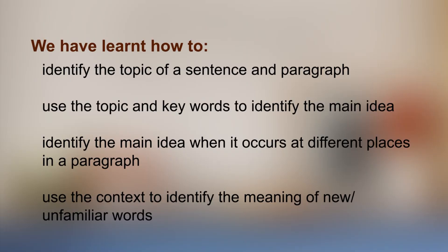Before we wrap up this module, let us summarize what we have done. We have learned how to identify the topic of a sentence and a paragraph, use the topic and keywords to identify the main idea, and identify the main idea when it occurs at different places in a paragraph. And finally, use the context to identify the meaning of new or unfamiliar words. We hope that this has been useful for you. You will find practice activities in your worksheet. Links to online resources have also been provided. Do take a look. Keep reading and enjoy the experience. Remember to make finding the main point of a paragraph a habit. When you do this, you will begin to understand the printed word better and it will lead you to write better. We will meet you soon in module 3. Until then, read and enjoy.